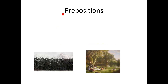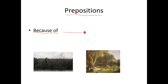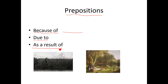Let's look at some ways we can show that cause and effect relationship. First of all, we could use a preposition. 'Because of' is a preposition, and it's followed by an object. 'Due to' is another preposition, which means the same thing. And 'as a result of' is another preposition. Let's look at some example sentences.